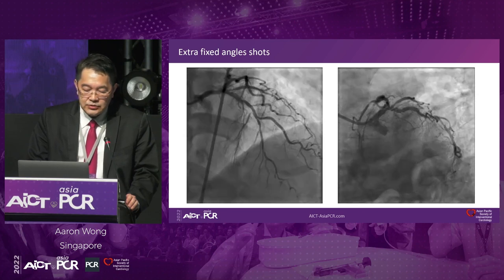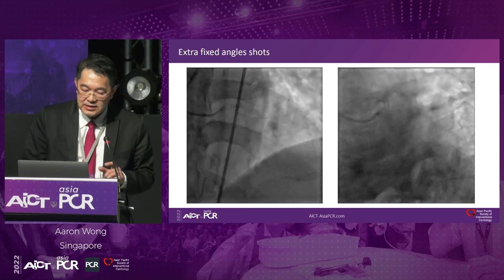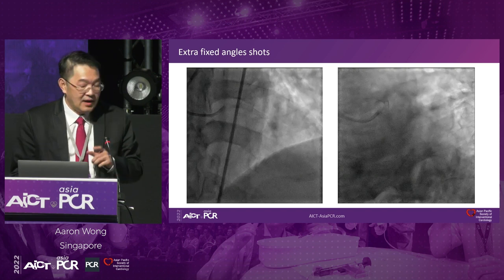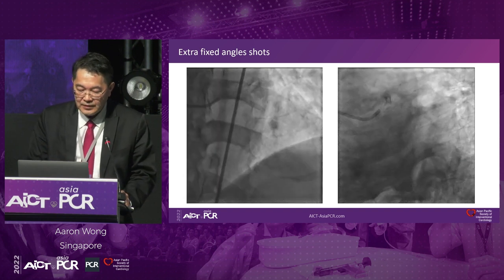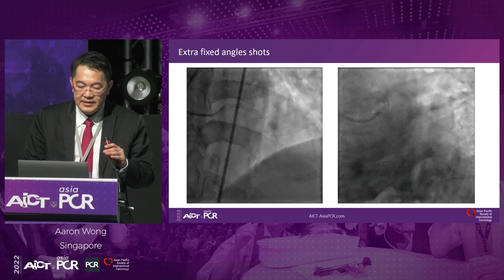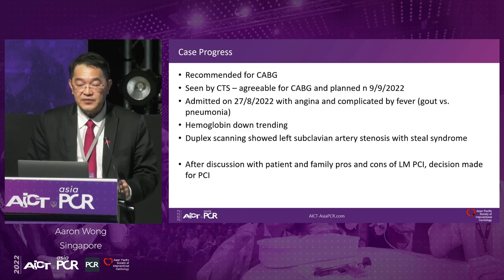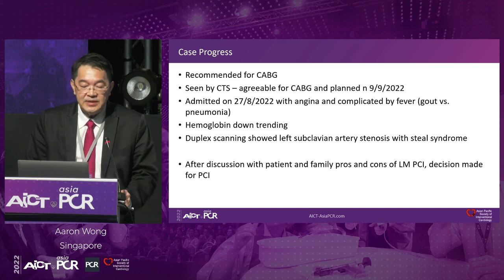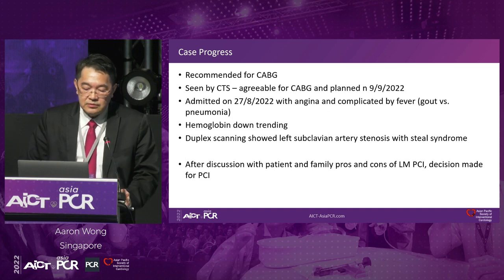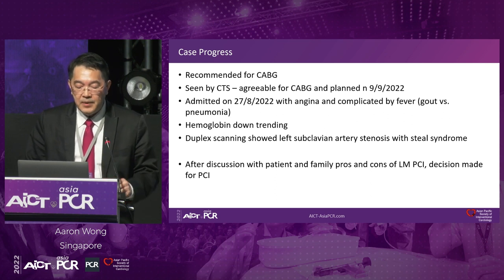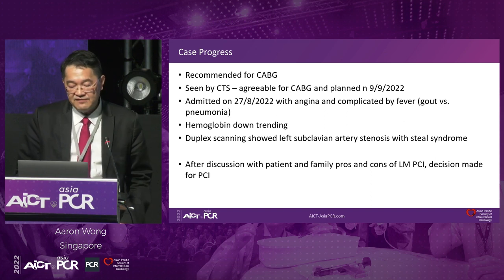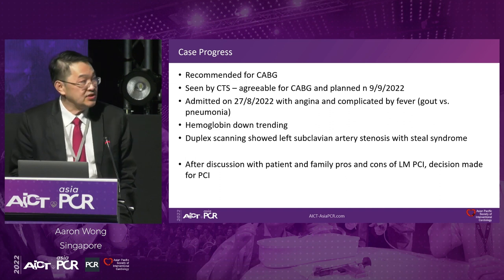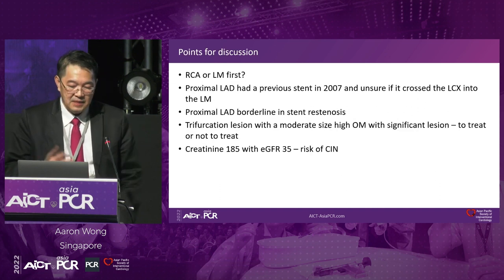The RCA also had in-stent tight lesions. Fixed angle shots showed the LAD and the spider view showing the left main bifurcation. The FFR to the LAD is 0.70, FFR to the circumflex is 0.78, and to the RCA is 0.74. CABG was recommended and agreed upon, but the patient was admitted before the operation date with angina complicated by fever and a downward trend of hemoglobin. A duplex scan showed left subclavian artery stenosis with steal syndrome. After discussion with patient and family on pros and cons, the decision was made for PCI.